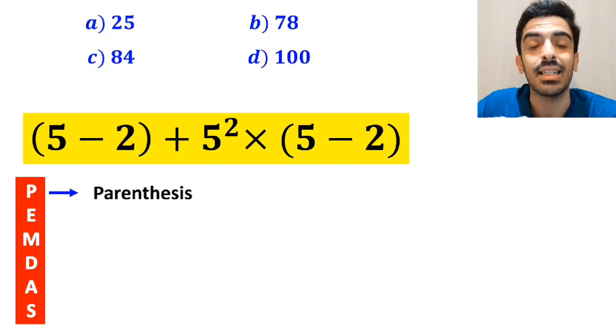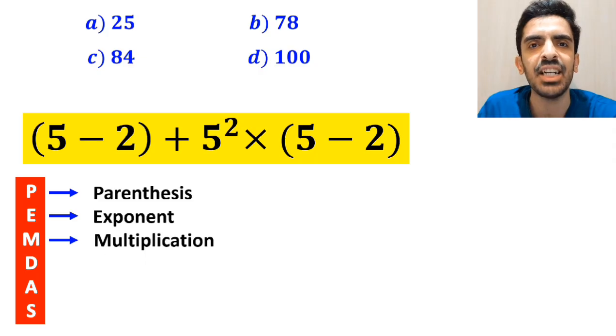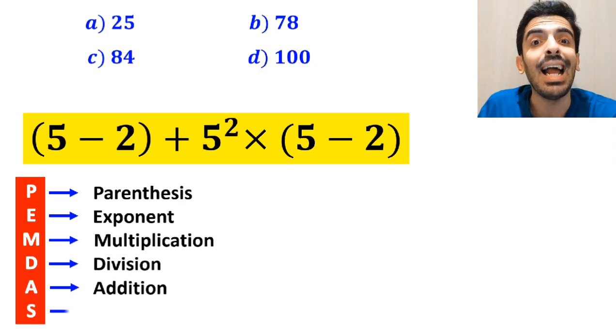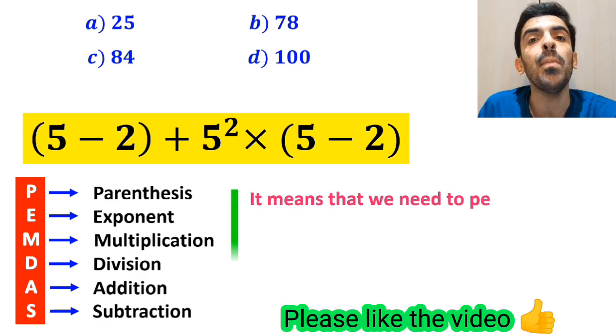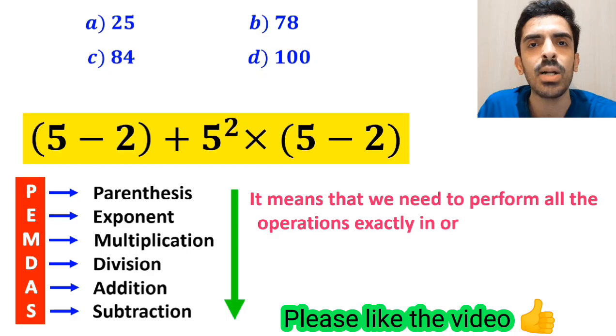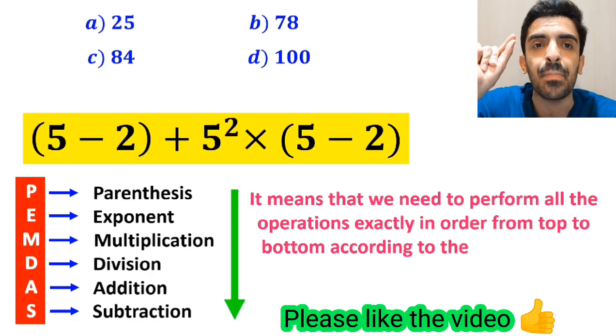In this rule, P stands for parentheses, E stands for exponent, M stands for multiplication, D stands for division, A stands for addition, and S stands for subtraction. It means that we need to perform all the operations exactly in order from top to bottom according to the PEMDAS rule.